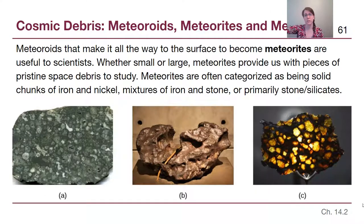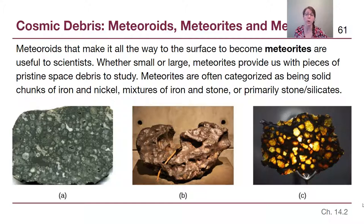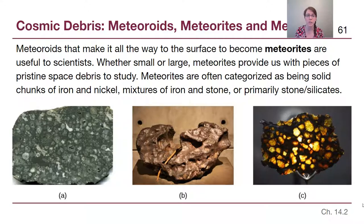Meteoroids that make it all the way down to the surface become meteorites, and then we can study them. They are essentially portions of pristine space debris that formed when the solar system formed — or sometimes rocks that were on Mars, ejected by an impact and later headed toward Earth. Meteorites tend to be categorized by composition, giving us snapshots of what was available in the solar nebula.